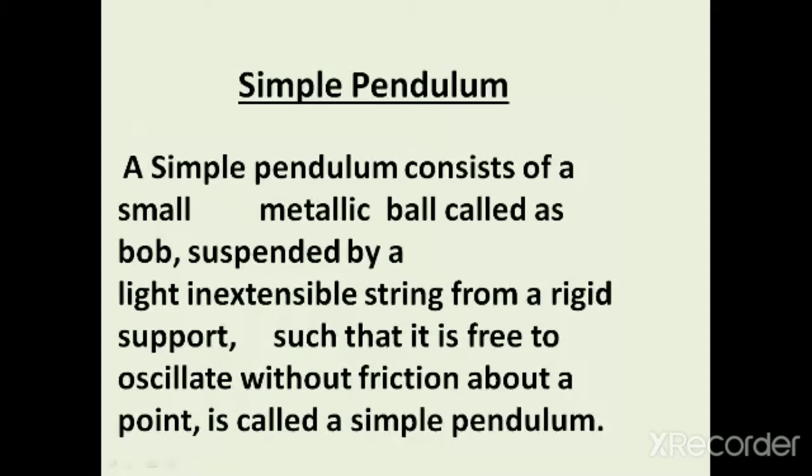Now, what is a simple pendulum? A simple pendulum consists of a small metallic ball called a bob, suspended by a light string hanged from a rigid support such that you can freely move the pendulum to and fro.